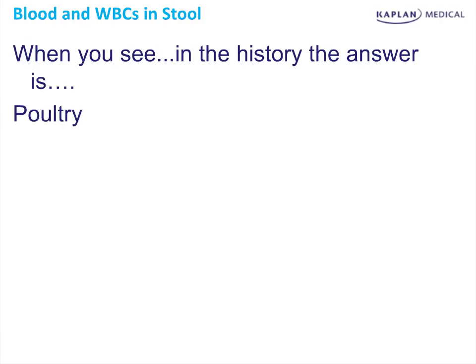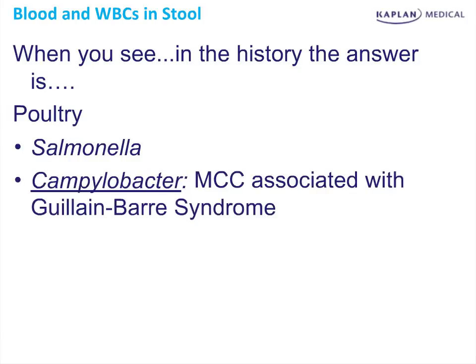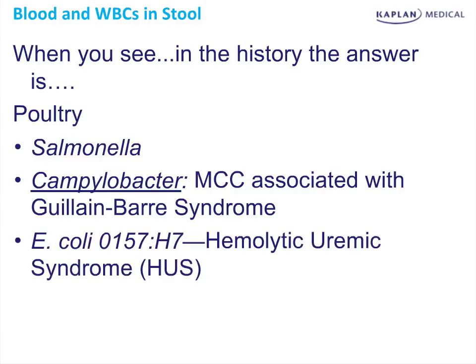When you see poultry in the history, the answer is Salmonella — chickens and eggs. Campylobacter: the most common thing in the history will be Guillain-Barré. It's associated with Guillain-Barré, and you can't identify it to a particular food too easily.